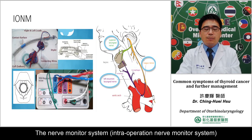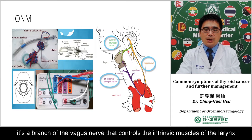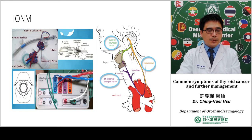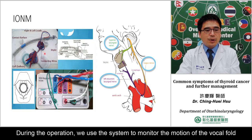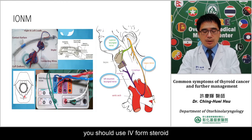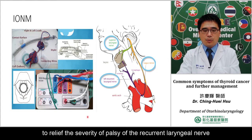Another important tool is the intra-operative nerve monitor system, because the recurrent laryngeal nerve is very important for vocal fold motion. The recurrent nerve is a branch of the vagus nerve and controls the motion of intrinsic laryngeal muscles and sensation below the larynx. During surgery, we use the nerve monitor system to monitor vocal fold motion. When the signal decreases, you should protect the nerve and use steroids after the operation to decrease paresis of the recurrent laryngeal nerve.